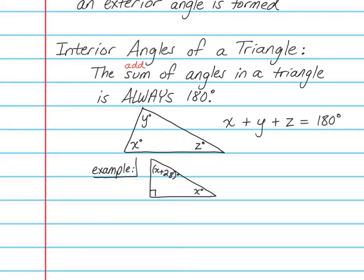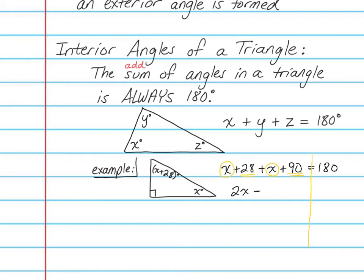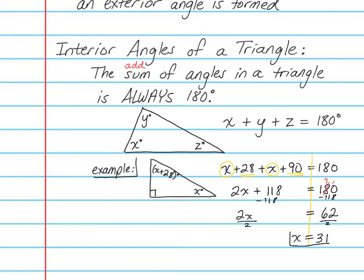In this example, I am told the three angles are x plus 28, x, and 90. So what I can do to solve this is say x plus 28 plus x plus 90 equals 180 degrees. When solving for a variable, make sure to simplify both sides of the equation first. On the left side, x plus x is 2x, and 28 plus 90 is 118, so 2x plus 118 equals 180. Now subtract 118 from both sides: 2x equals 62. Divide by 2 on both sides, and x equals 31.